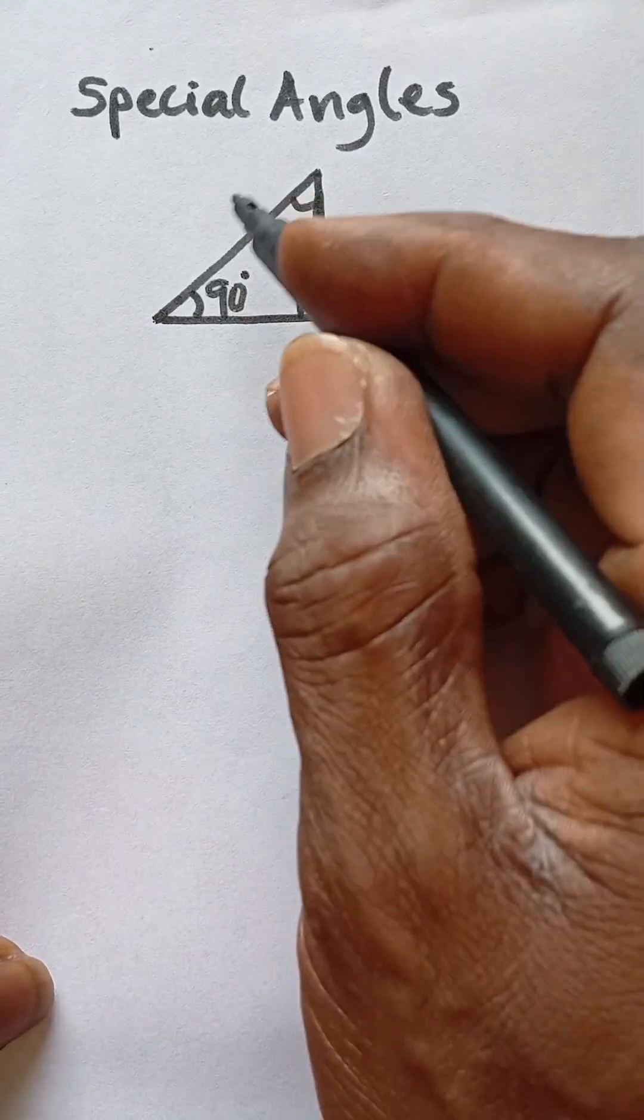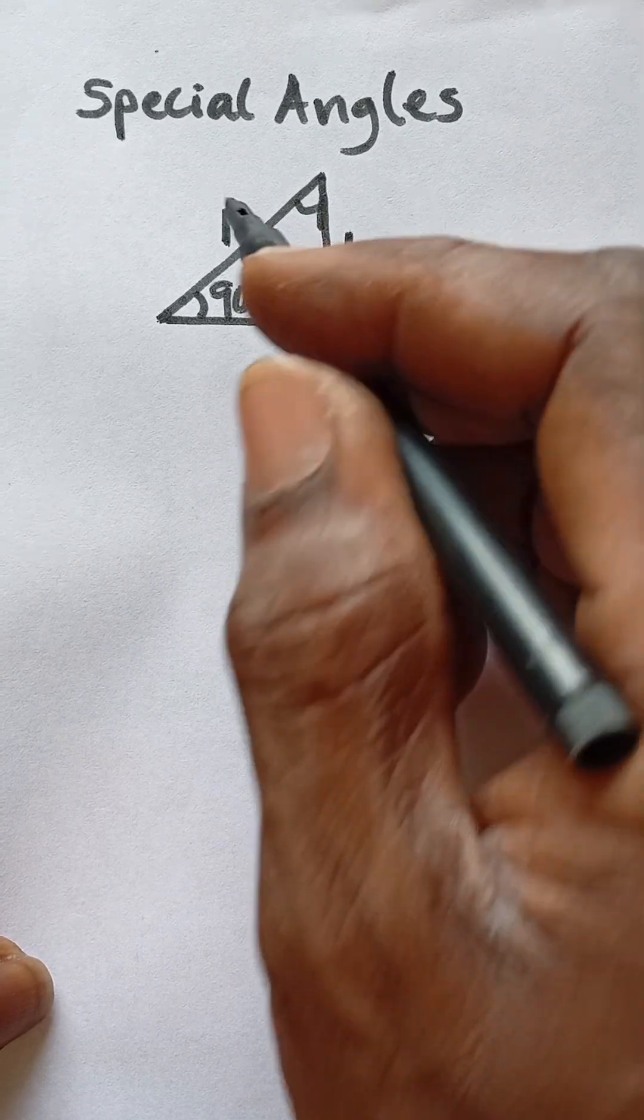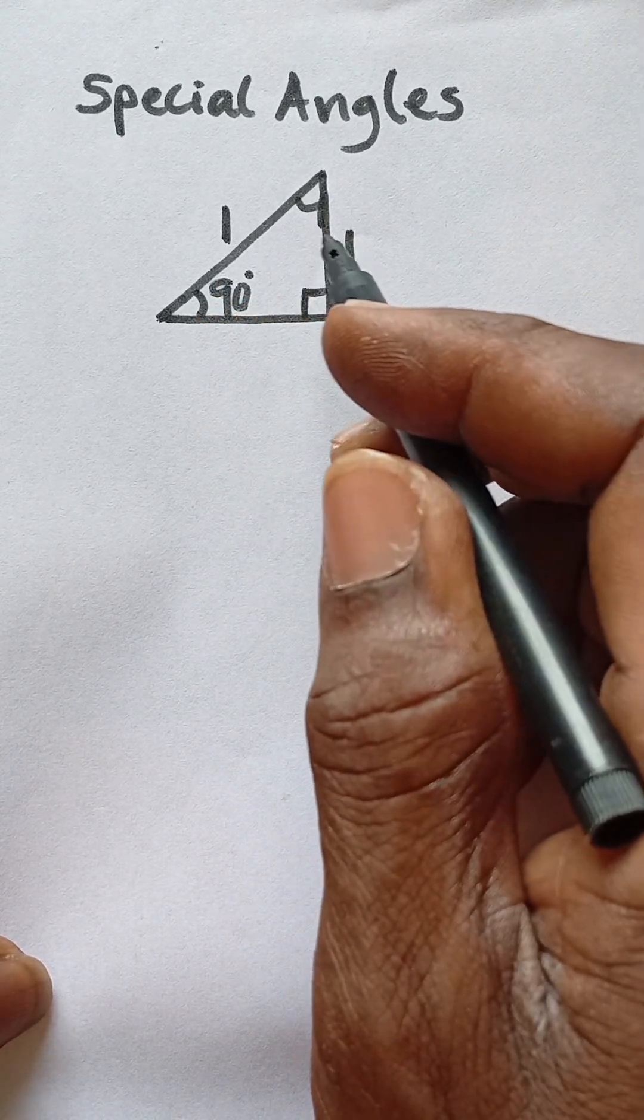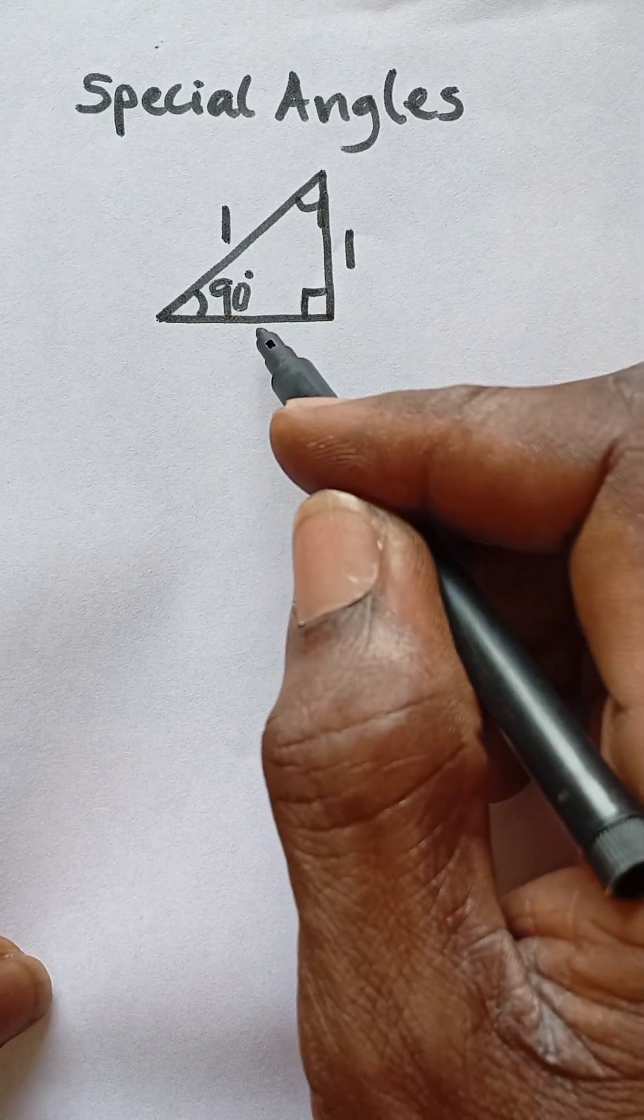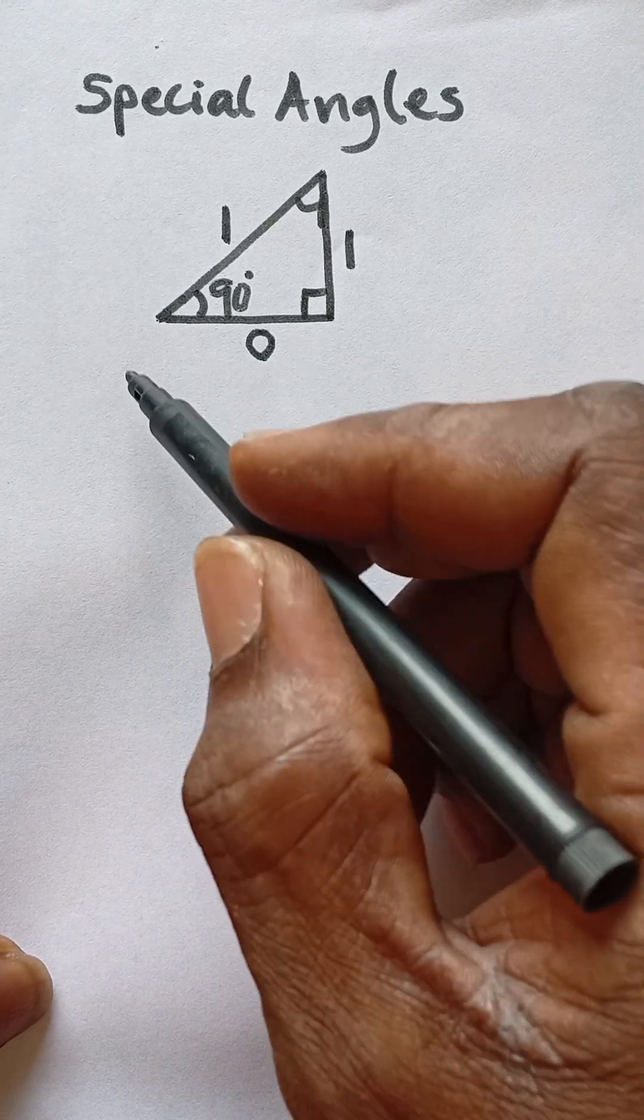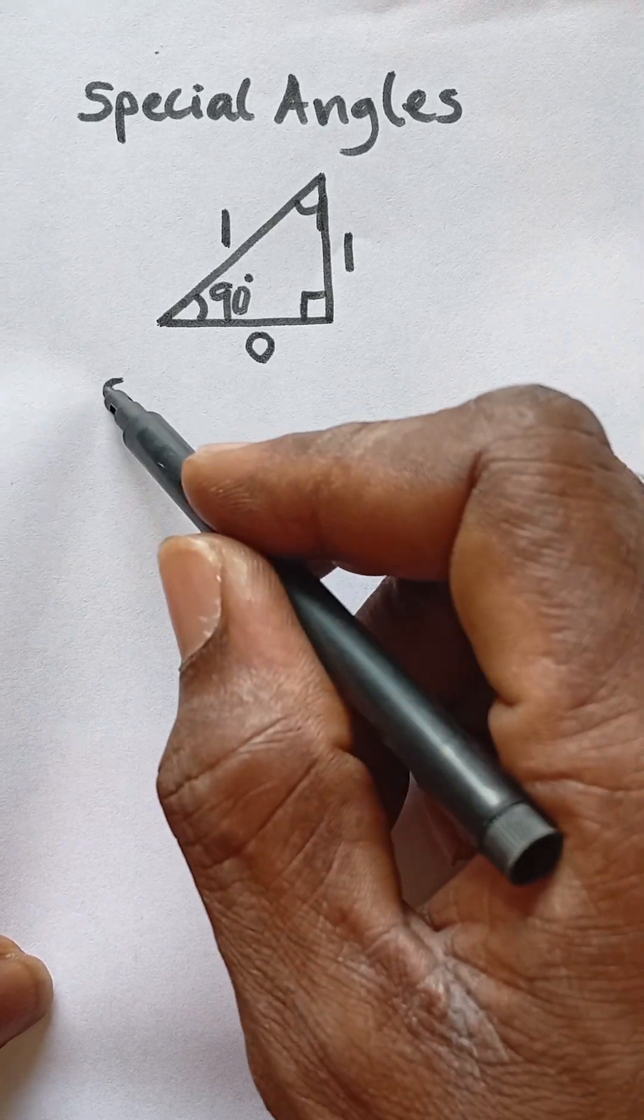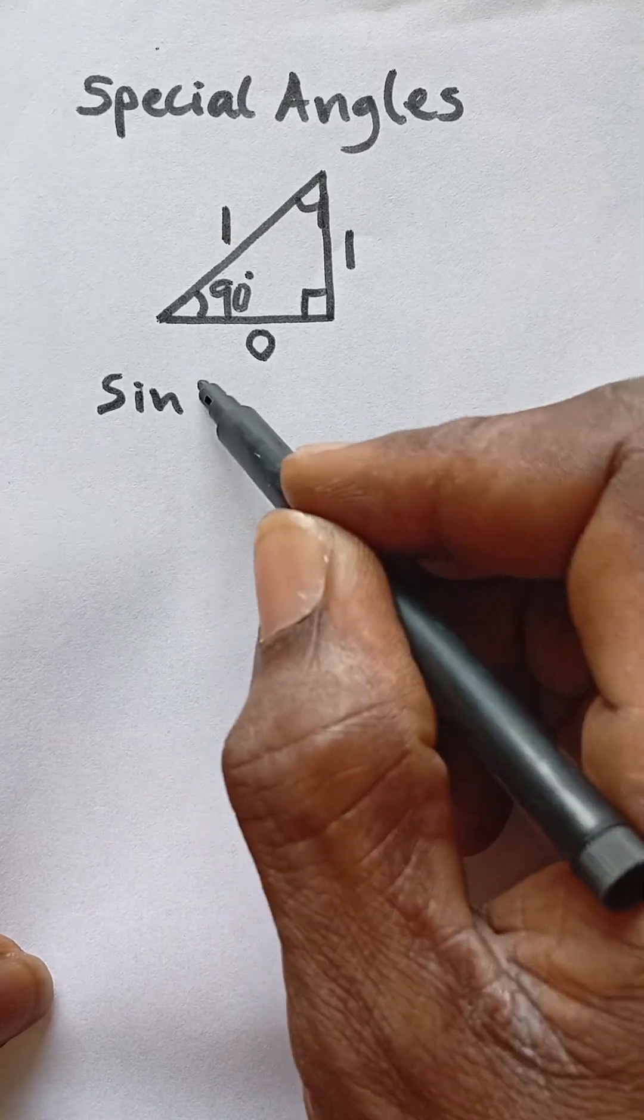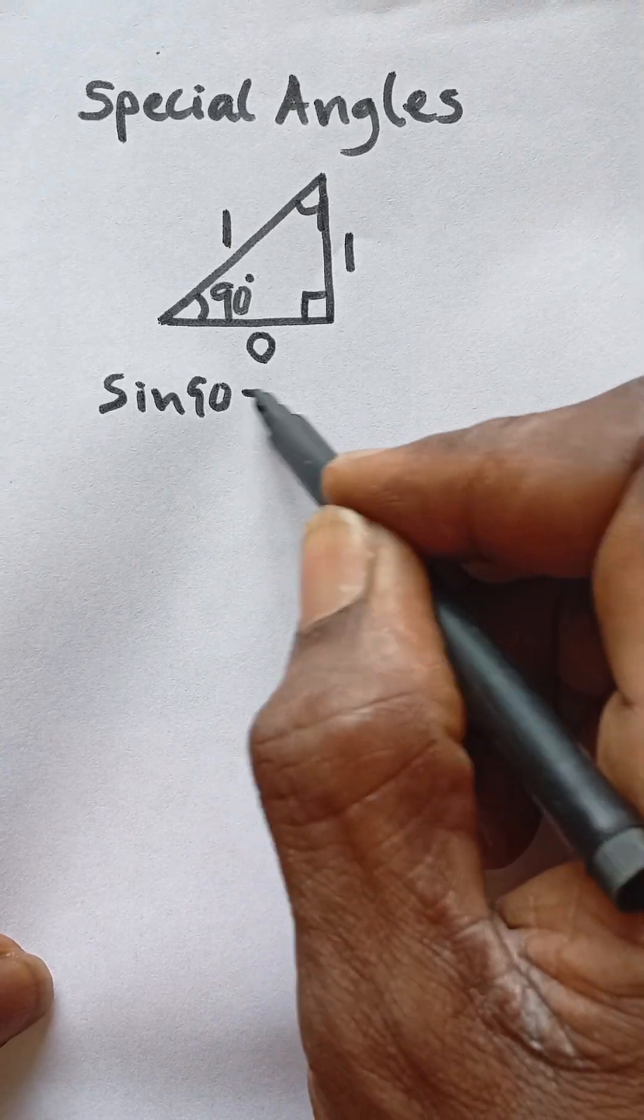...this as one, this place will also be one. When you use Pythagoras theorem, you have this place as zero from Pythagoras theorem. So here we can say sine 90, using trigonometric ratios, sine 90 will be equal...